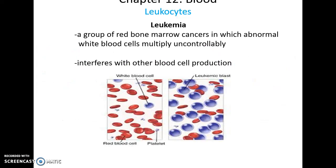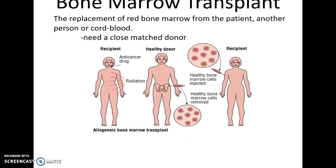Leukemia is a group of red bone marrow cancers that leads to massive production of abnormal, non-functional white blood cells, which then interfere with other blood cell production. This leads to anemia and makes the person more prone to infections — a very serious condition. It can be treated by a bone marrow transplant: the recipient's red bone marrow is destroyed via anti-cancer drugs and radiation, then a healthy matching donor's red bone marrow is removed and placed into the bones of the recipient, giving them new healthy red bone marrow.